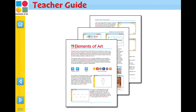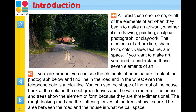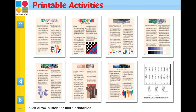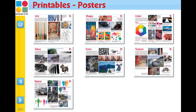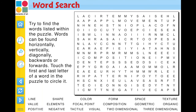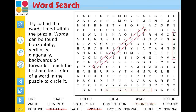Also included in this resource is a printable PDF teacher guide and interactive introduction. Printable PDF versions of the activities and posters found in each chapter are available. The completely interactive word search allows students to touch the first and last letters of a hidden word in the puzzle to circle it. The found words then get crossed off in the word list. Words can be found horizontally, vertically, diagonally, backwards, or forwards.